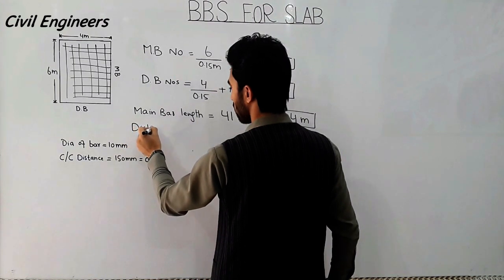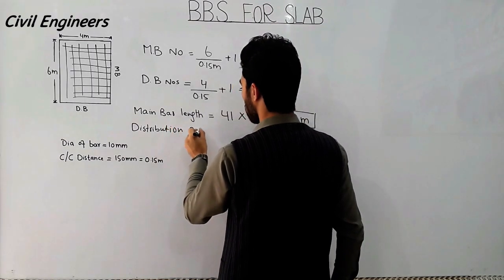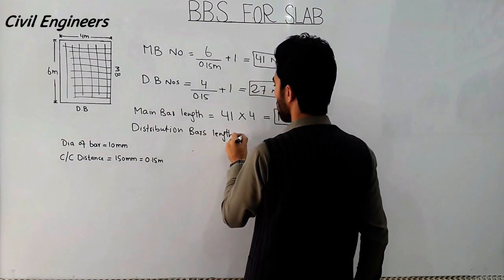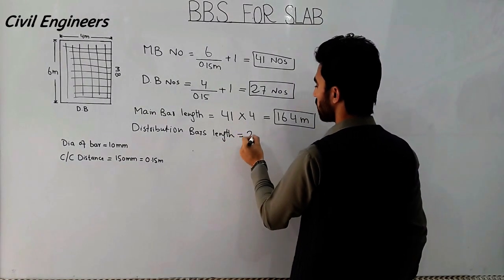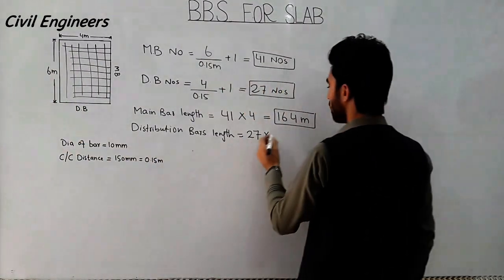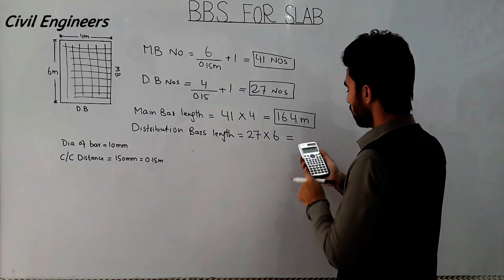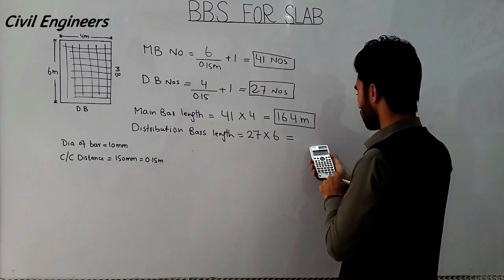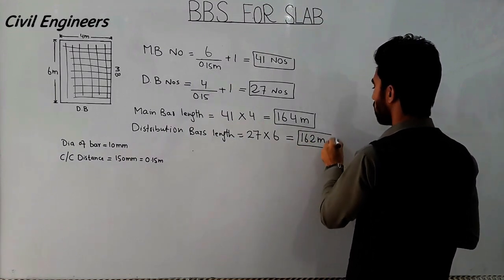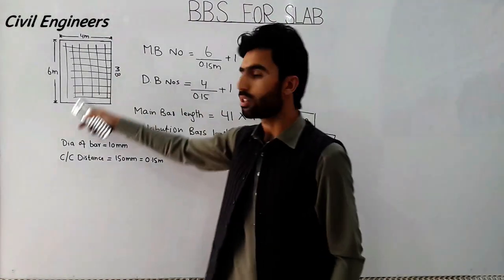Now for the distribution bar length: the number of distribution bars is 27 and the length of every bar is 6 meters. So, 27 multiplied by 6 meters equals 162 meters total length for distribution bars.